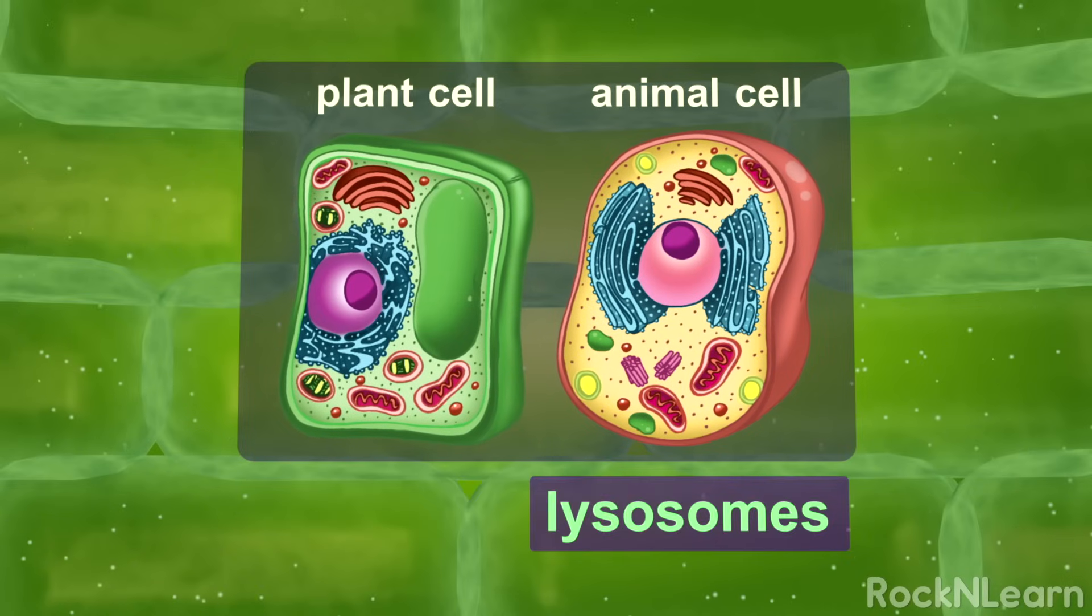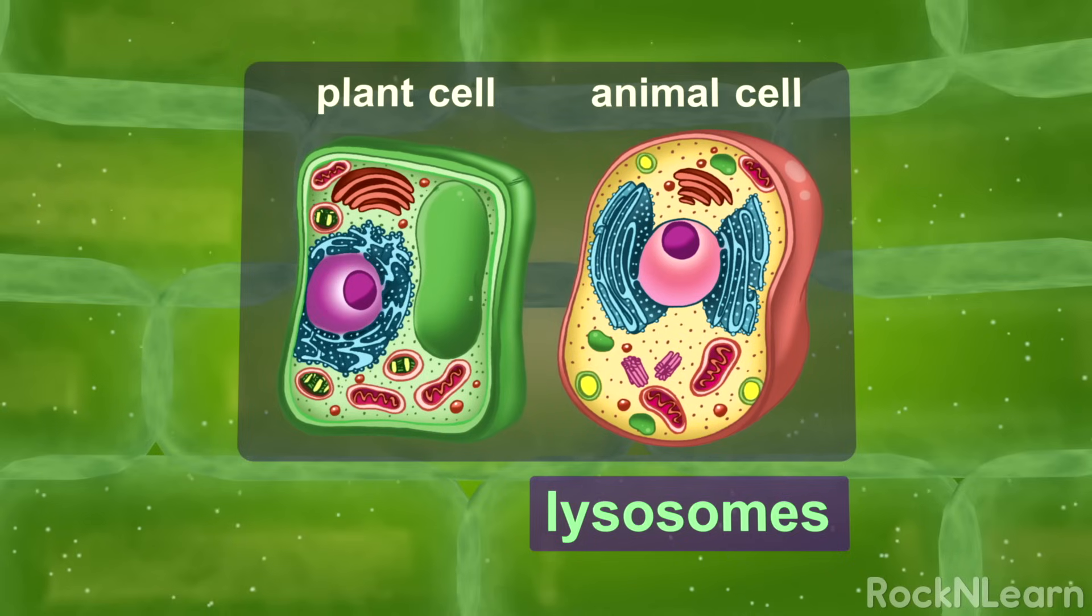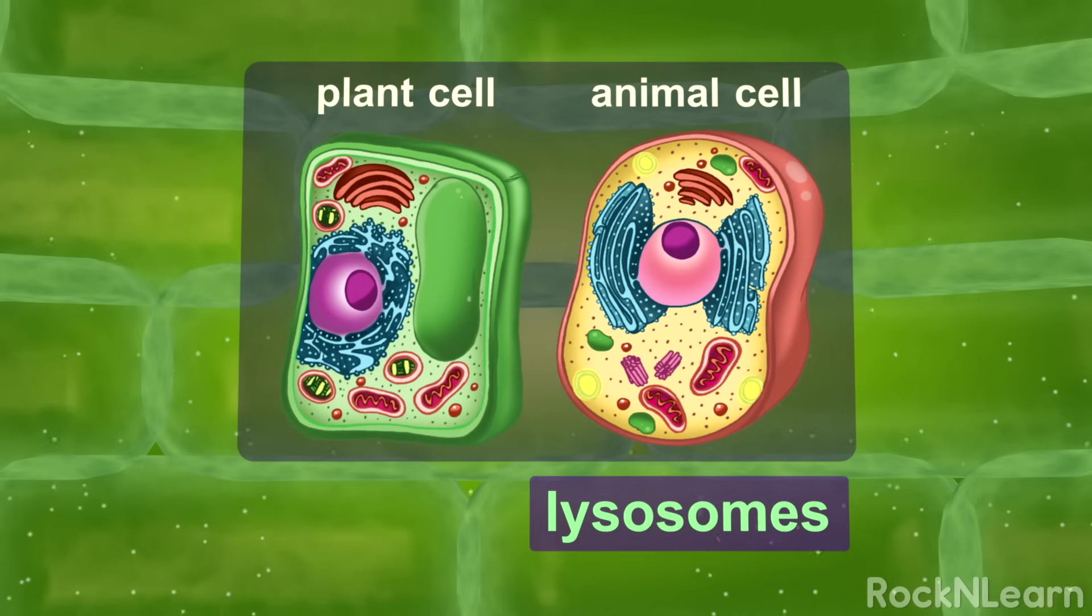Lysosomes are a common organelle in animal cells, but aren't found in many plant cells. They help get rid of waste in animal cells and help with cell defense.